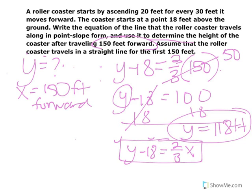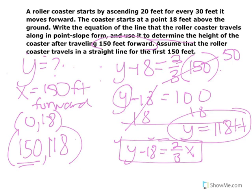So we can even write that as an ordered pair, too. When x, or when we've moved 150 feet to the right, then we're 118 feet high. Remember we started 18 feet above. So remember we started right here at (0,18). We've moved 150 feet, and now we're 118 feet above in terms of the roller coaster.